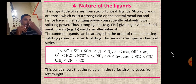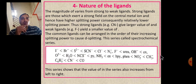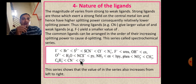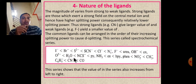The fourth factor is the nature of the ligand, which is important for the spectrochemical series. The magnitude of delta varies from strong to weak field. Strong field ligands exert a strong field on the central metal ion and produce higher splitting, while weak field ligands give relatively lower splitting. In the spectrochemical series, ligands before H2O are weak field or high spin ligands, while ligands after H2O are strong field or low spin ligands. The value of delta increases from left to right in the series.